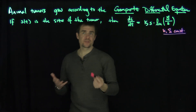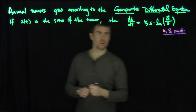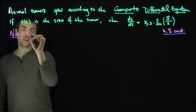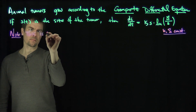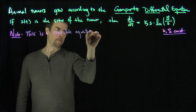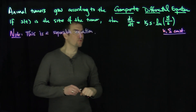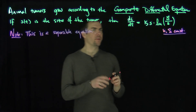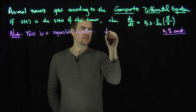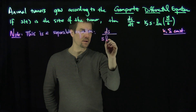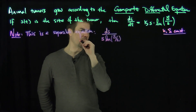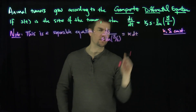This is a separable differential equation. So let's separate it — let's put all the s terms on one side. If I separate this, it'll become ds over s·ln(S/s) is equal to k dt.